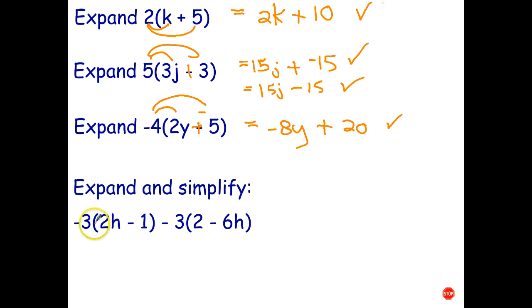Okay, and the last one, we need to expand and simplify. So, once again, strongly recommend that you change every subtraction to add the negative. You're going to make fewer mistakes when you're first learning algebra. So, multiply those together. Multiply those together. Negative 3 times 2h is negative 6h. Plus, negative 3 by negative 1 is positive 1. Plus, negative 3 times 2 is negative 6. Plus, negative 3 by negative 6h. Negative times a negative is positive 18h.